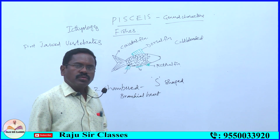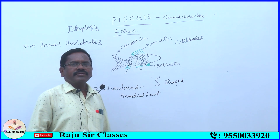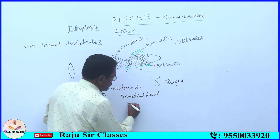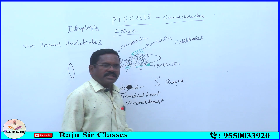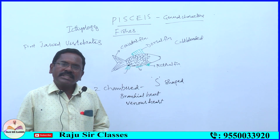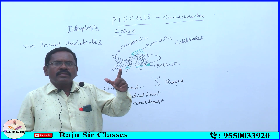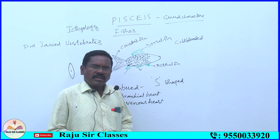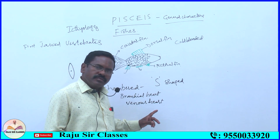The heart is called a branchial heart because it pumps deoxygenated blood to gills. The heart is always filled with deoxygenated blood; therefore, the heart is also called a venous heart. Veins carry deoxygenated blood; arteries carry oxygenated blood. In fishes, only deoxygenated blood passes through the heart, so it is called a venous heart.